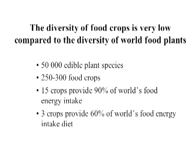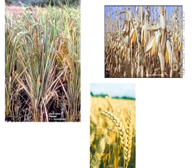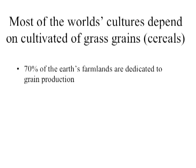When you think back to the lecture on wild plant use for food, you can appreciate the great diversity of species consumed wild. Of these 15 crops, only three crops provide 60% of the world's food energy intake, which is quite amazing. These crops, as you may guess, are rice, corn, and wheat. These are all cereals — the grains of grasses. Most of the world's cultures depend on cultivation of grass grains. In fact, 70% of Earth's farmlands are dedicated to grain production.